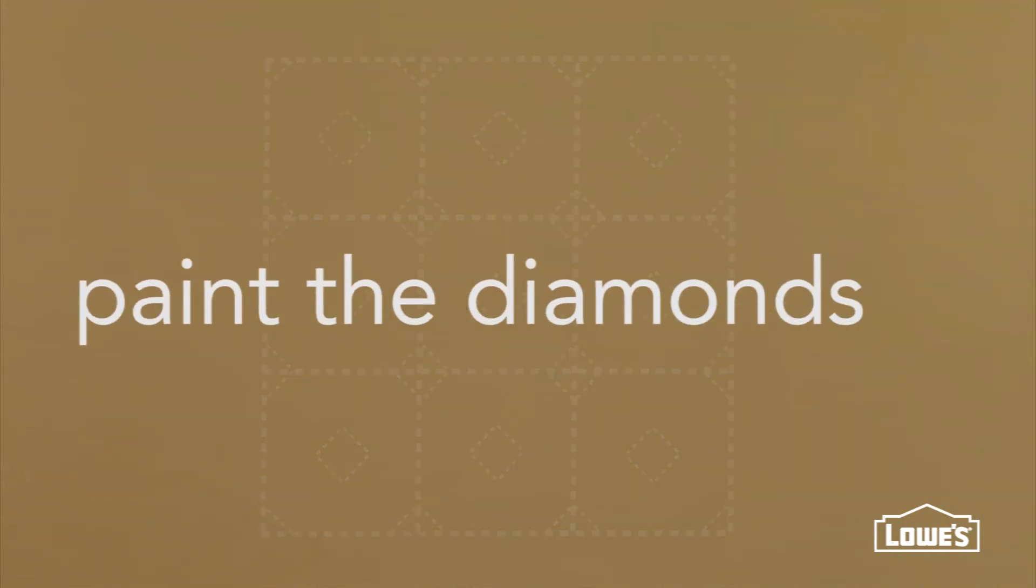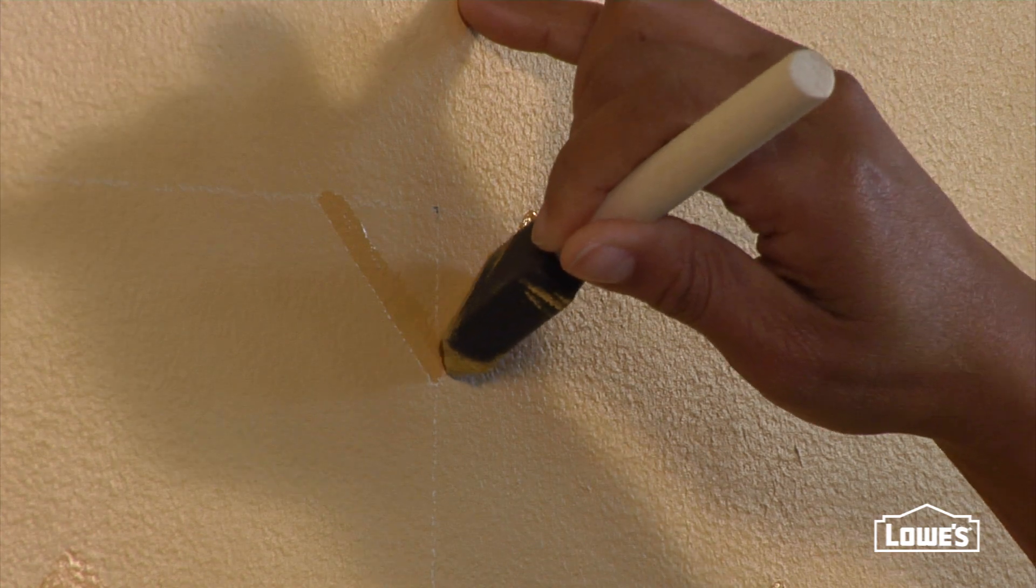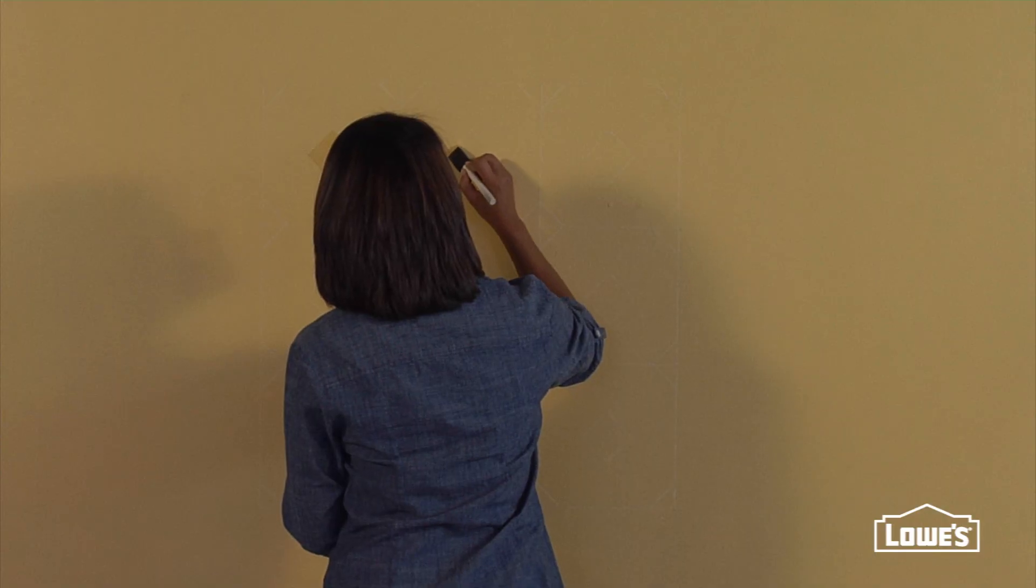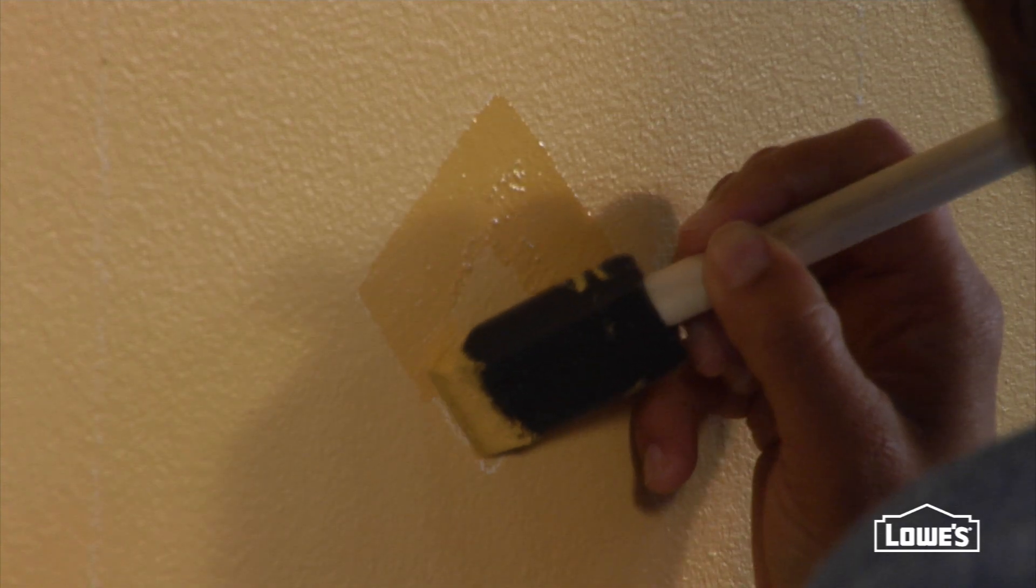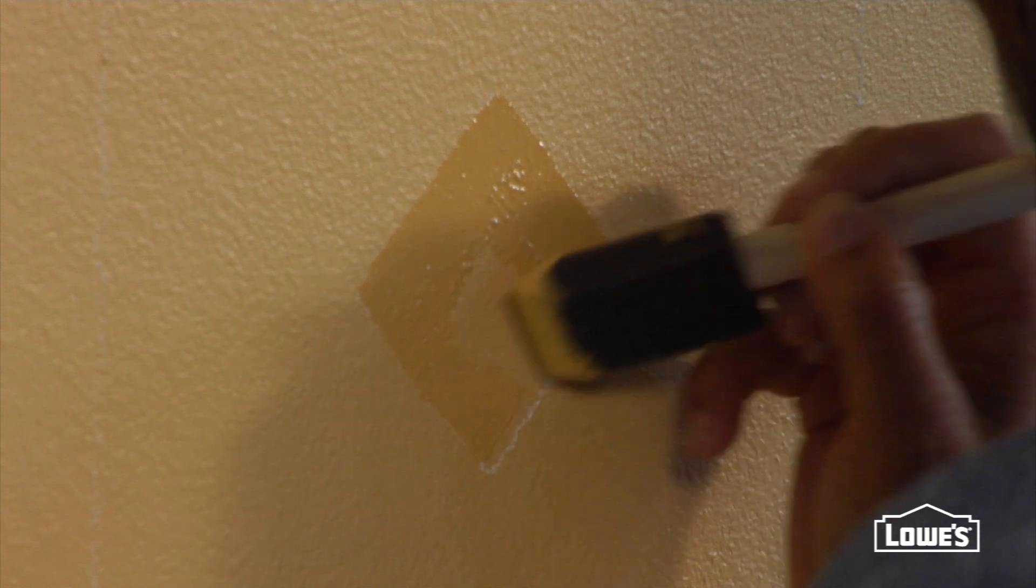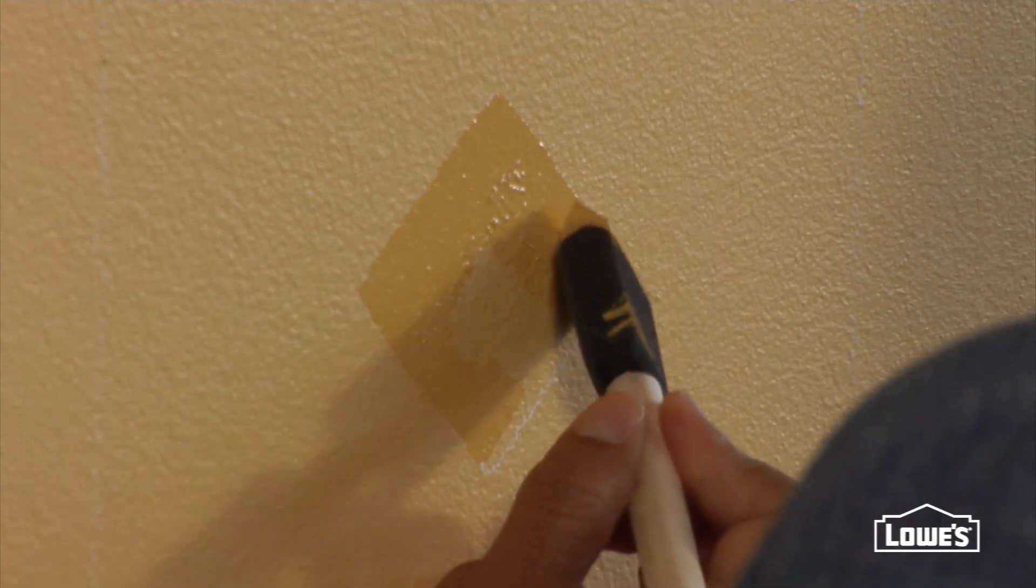Now you're ready to paint the diamonds. Use a slightly darker shade than your base coat. This gives the pattern a little depth. A foam brush is perfect for painting the diamonds because it has a nice straight edge. Let the diamonds dry and then move on to the next step.